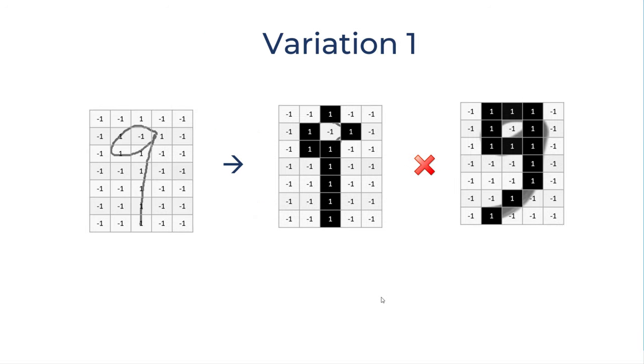There could be a variation since it is a handwritten digit. There could be variation in how you write it which will change the two-dimensional representation of numbers and again you will not be able to match it with the original grid.